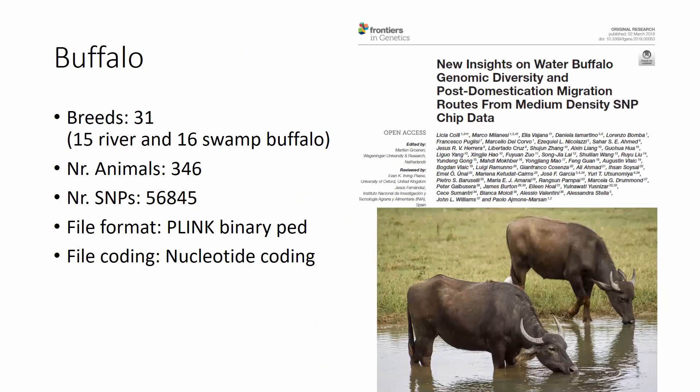We list the breeds here in alphabetical order, starting with Buffalo, connected to a publication in Frontiers in Genetics. In this you find 31 breeds — 15 river and 16 swamp buffalos — more than 300 animals genotyped on what seems to be around the 50k SNP chip. The file format is convenient: PLINK binary BED files with numeric coding.